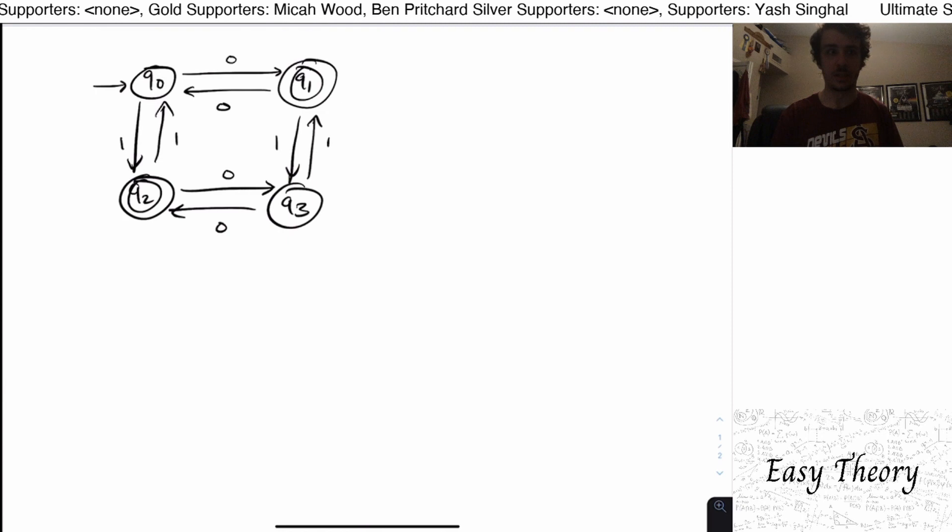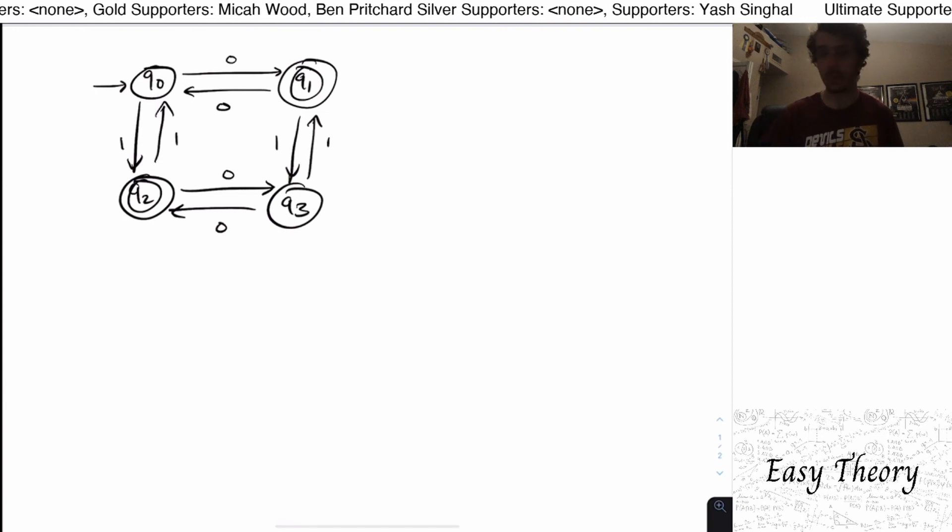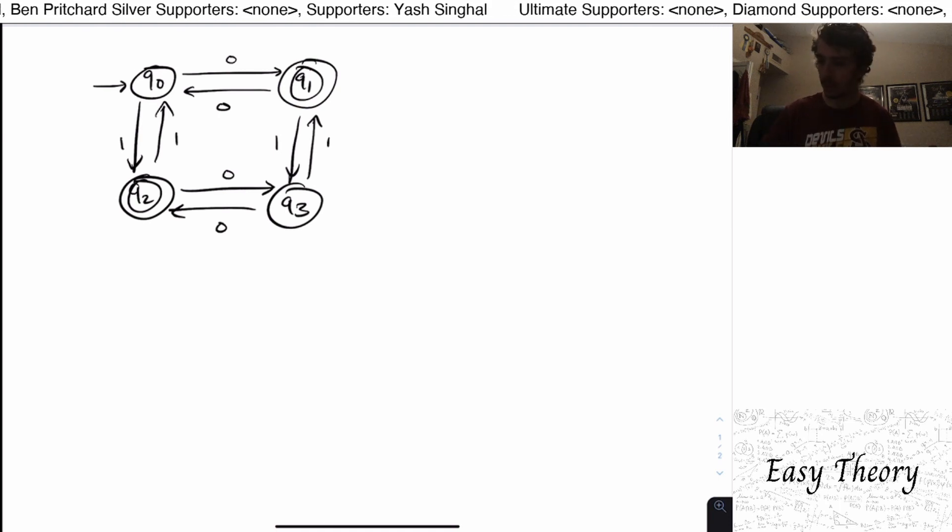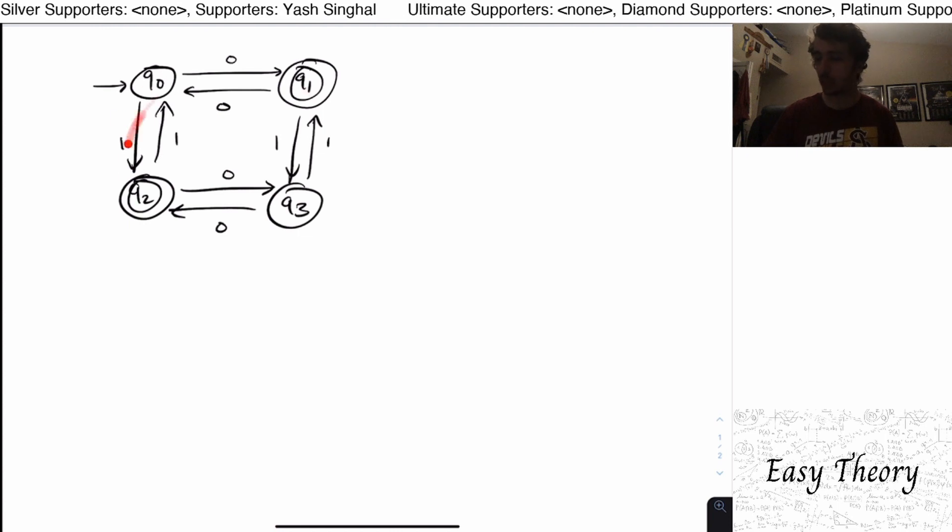Hi and welcome back to another edition of Easy Theory. So today we're going to continue from where we left off. Last time we were talking about this machine and I asked you, is there a simpler way to represent this machine in an English description? And one way that you can think about this is that this machine will accept all of the strings that are of odd length.